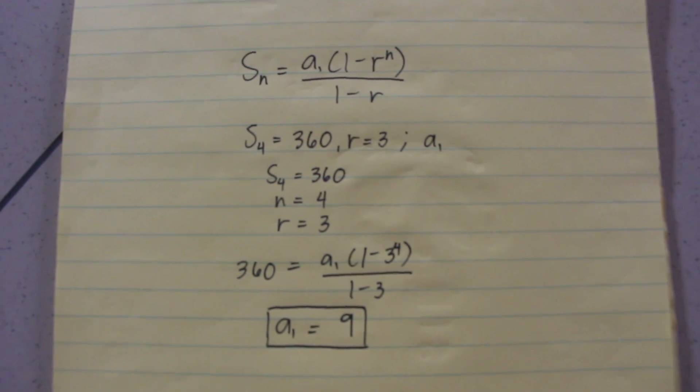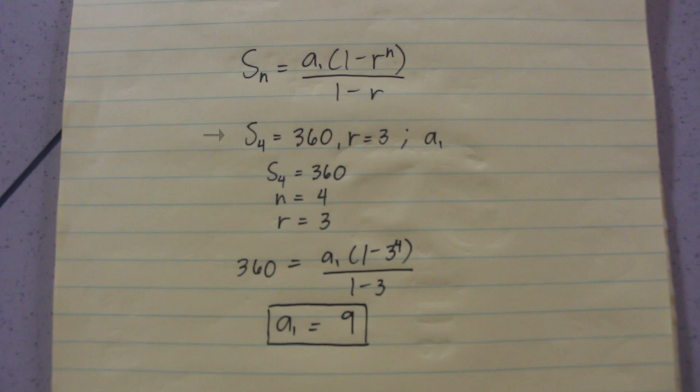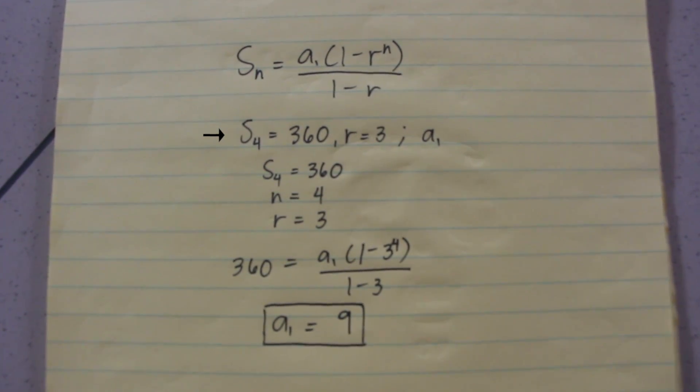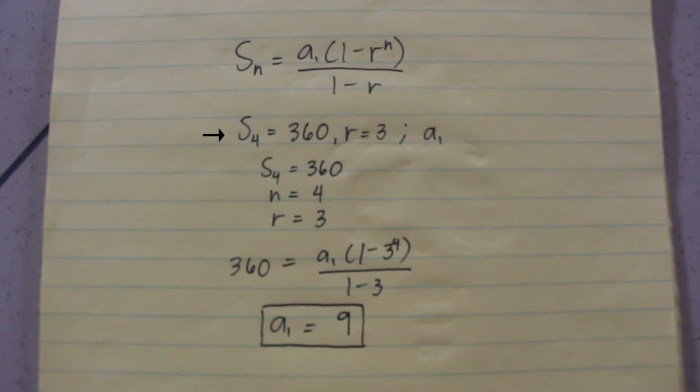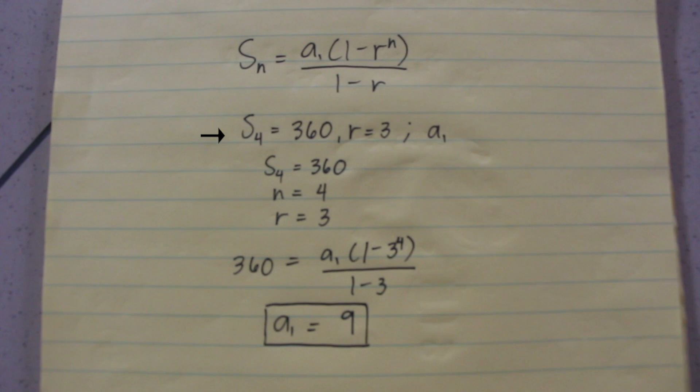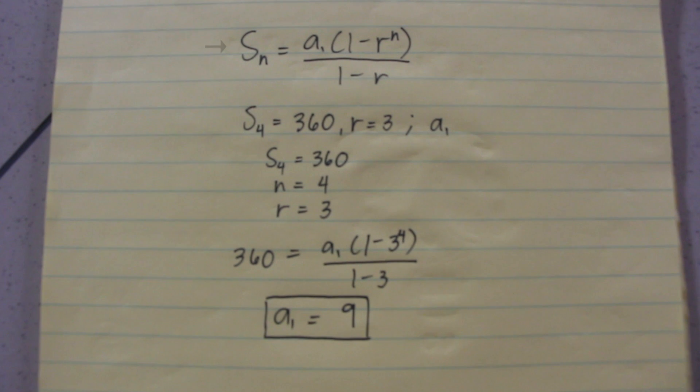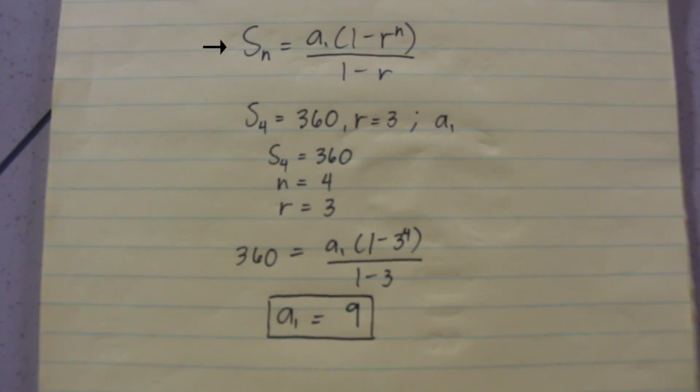Let's try this slightly different problem. In this problem, we are given that the sum of the first 4 terms of a geometric sequence denoted by S sub 4 is 360, and the common ratio to be 3, and we are looking for a sub 1 or the first term. Using the formula, once again, we plug in the needed given values.